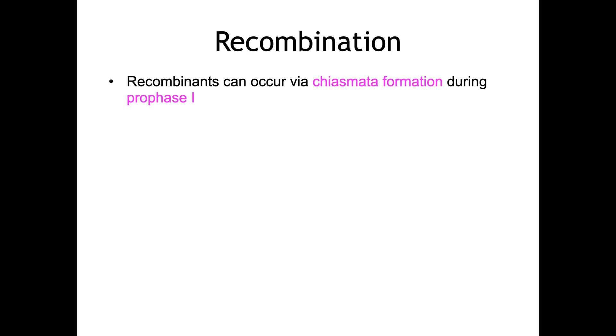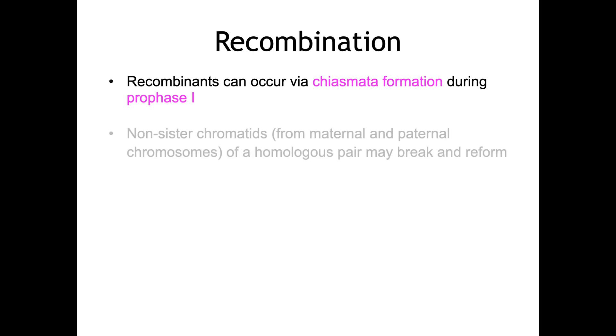You'll need to revisit your knowledge on meiosis to understand this completely. In that chiasmata formation, non-sister chromatids from the maternal and paternal chromosomes of a homologous pair may break and reform.